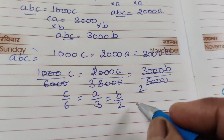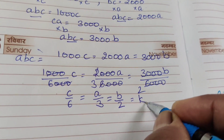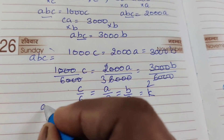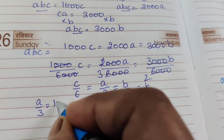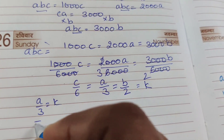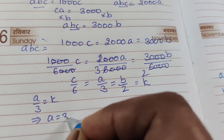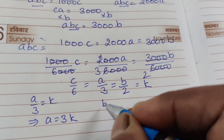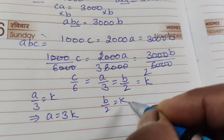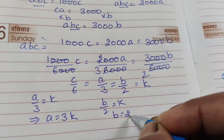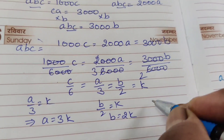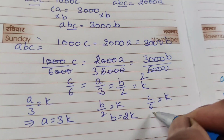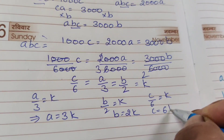Suppose all the values are equal to K. Then we can write: A/3 equal to K, which means A equal to 3K. Similarly, B/2 equal to K means B equal to 2K. And C/6 equal to K means C equal to 6K.